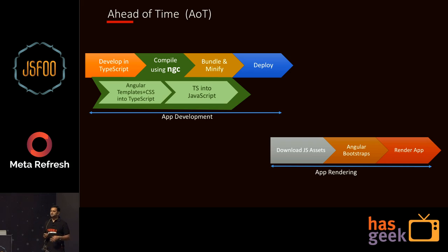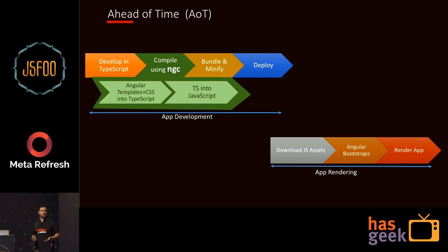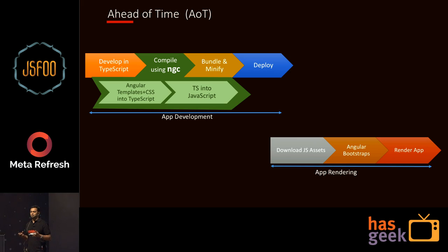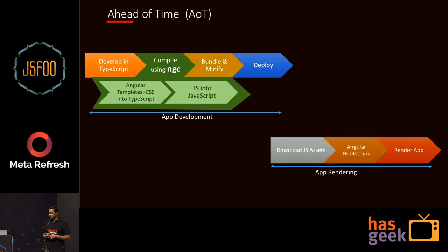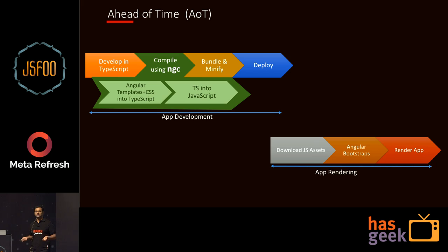With Ahead of Time compilation, the compilation actually happens at development time. You run the ngc compiler on your application, which takes your Angular templates, HTML, and CSS and bundles them all into a TypeScript file, which eventually gets converted into VM-friendly JavaScript code, which you then minify, bundle, and send to clients. When users download the app, Angular bootstraps and starts running right away — there's no compilation step. That's a significant benefit thanks to AOT.